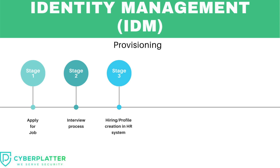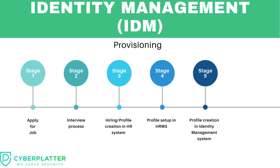Once the HR team collects the information, they set up the user profile in the HR management system, called HRMS. Once the profile is created in HRMS, HRMS kicks off a scheduled job that creates a profile in identity management. Identity management is where the user's ID, a temporary password, and email address get generated, as it has all the logic built in to create user identities.